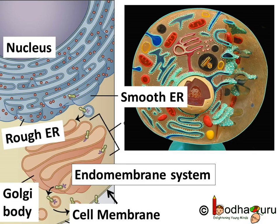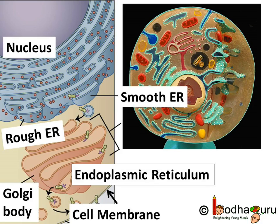Look closely — the network of rough endoplasmic reticulum is connected to the outer membrane of the nucleus. This network is the framework or a very fascinating system which creates protein, modifies them, packs them and transports them. This system is known as the endomembrane system. It also includes organelles such as lysosomes and Golgi body, which play an important role in protein production.